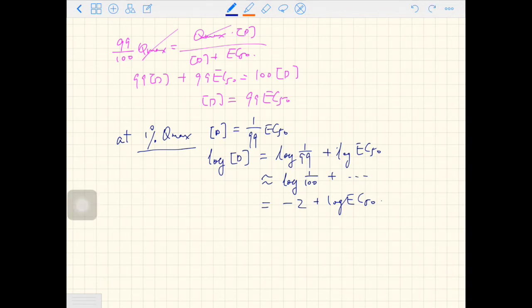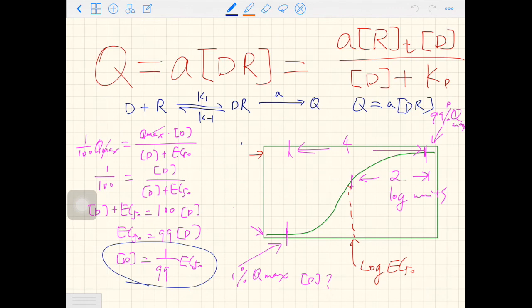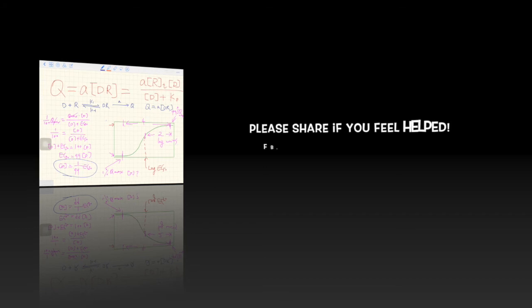By the same token, at 99% Q max, log D equals log EC50 plus 2. That is why the rectangular hyperbola of the Clark's model should cover four log units on the x-axis.